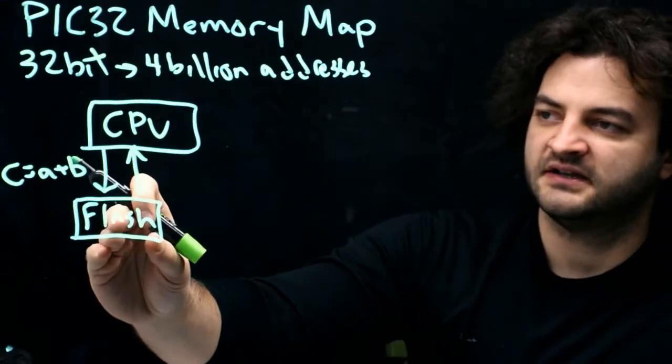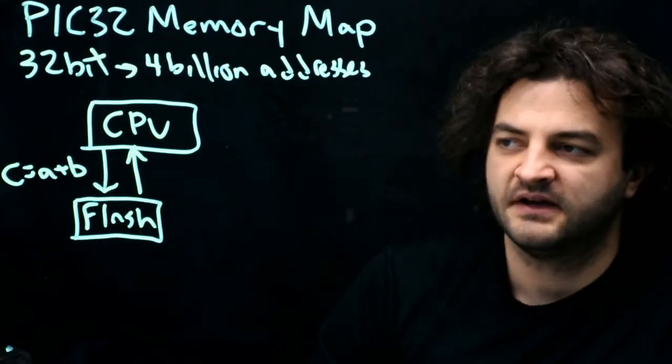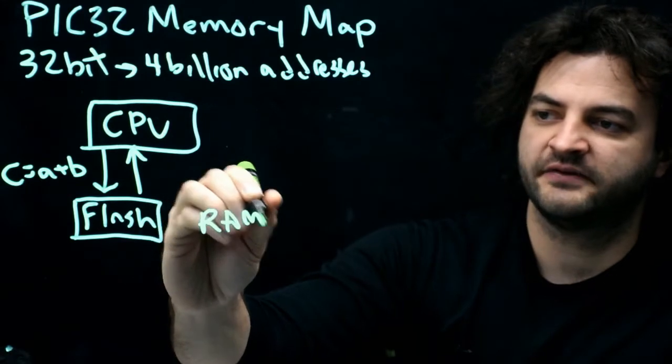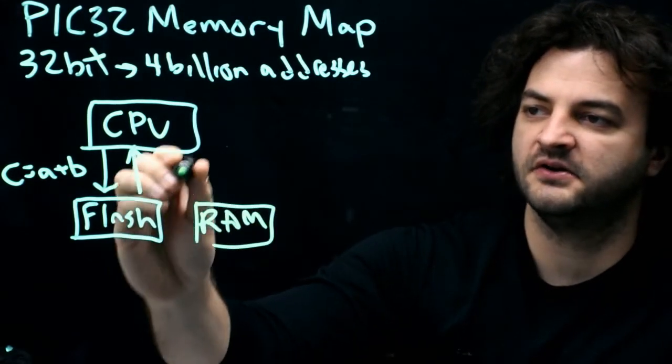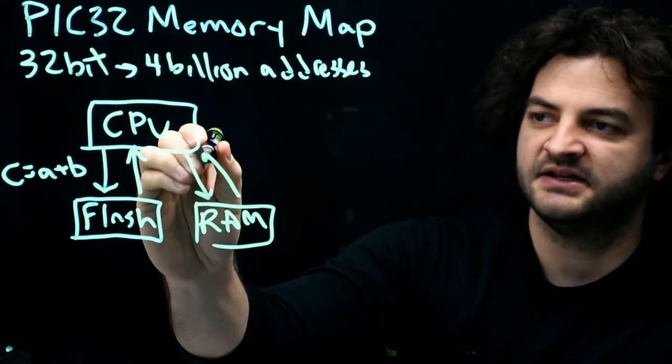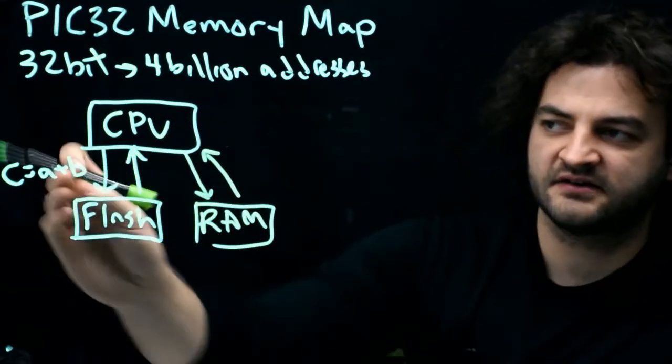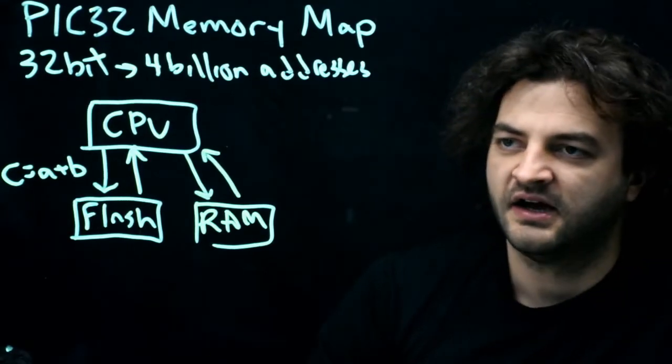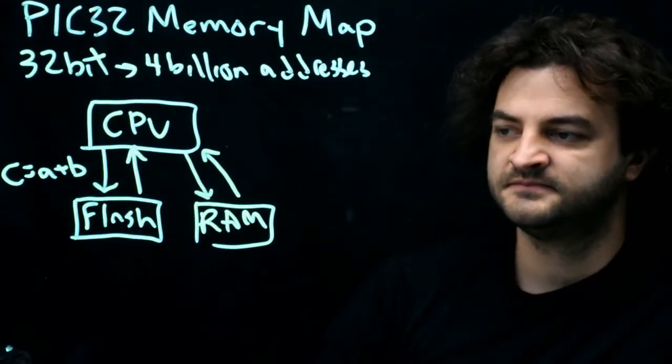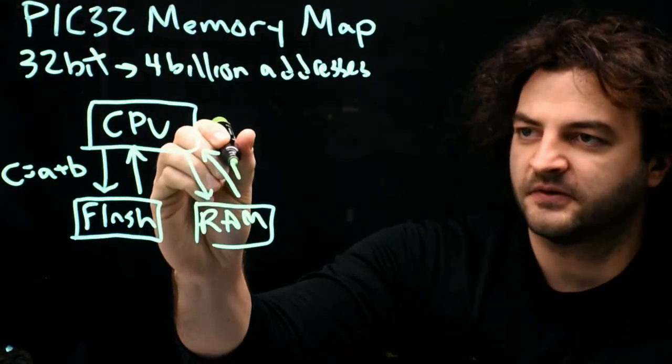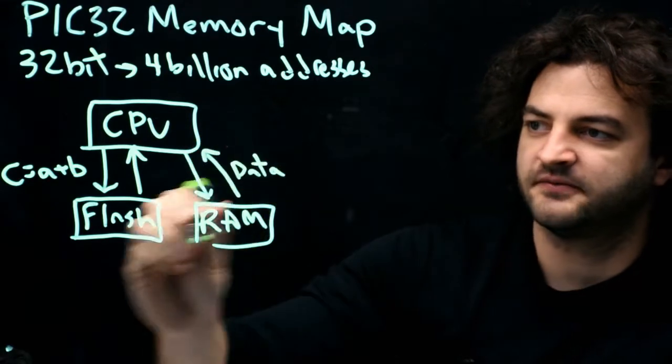It grabs these instructions. Then it goes to RAM. So RAM is where our variables are stored. And it says, let me go allocate some space for C. Let me go grab the value of A and B. And each of these instructions is taking like one clock cycle or 1/80 millionth of a second. So the data is coming back and forth from RAM. The instructions is coming back and forth from flash.